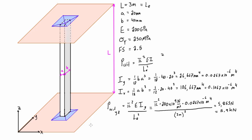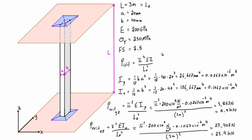For buckling in the XZ plane, we redo the expression using the moment of inertia about the X axis: P_crit = π²EI_x / Le². We find that P_crit in the XZ plane is equal to 23.4 kilonewtons.